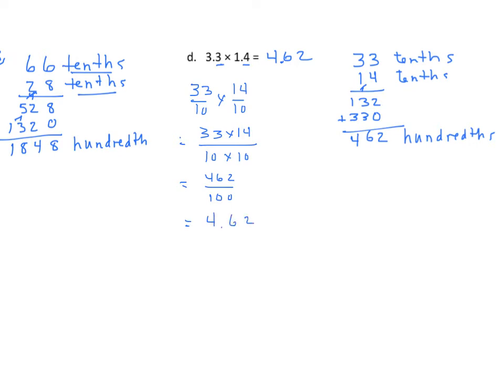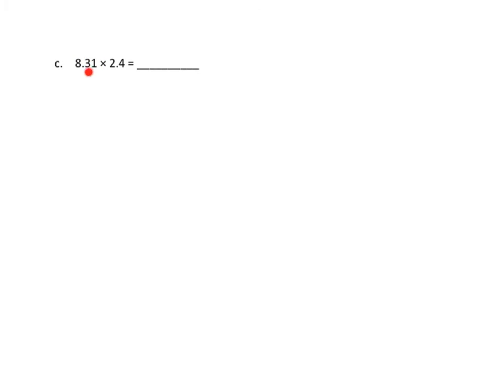We'll do one more example. We'll look at a word problem, and then we'll just compare that word problem with the one you have in your homework. This one's slightly different in that we have one of our factors going to the hundredths. So we have two decimal places in the first factor and one in the second factor. Therefore, we can expect three decimal places in our product.